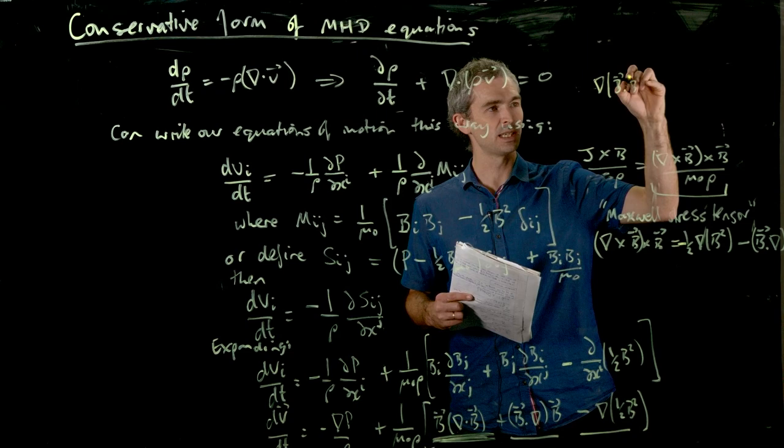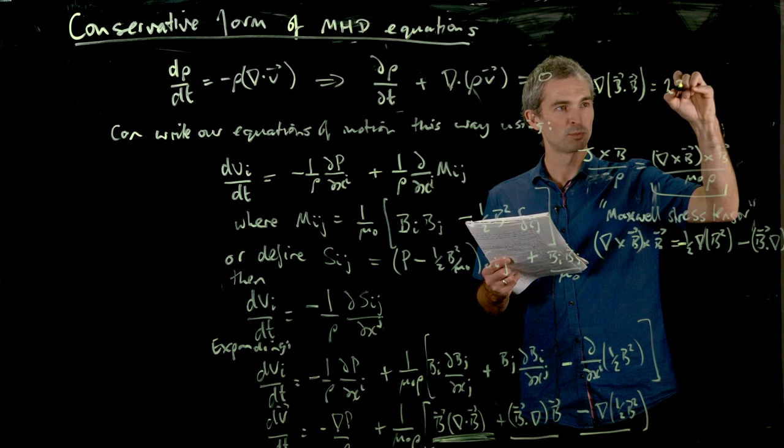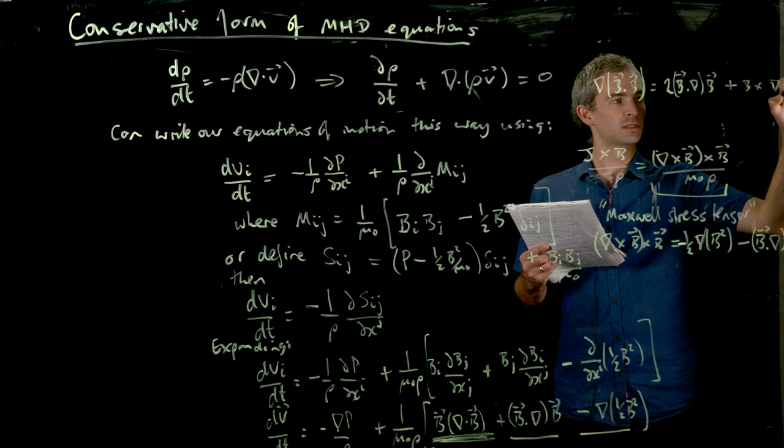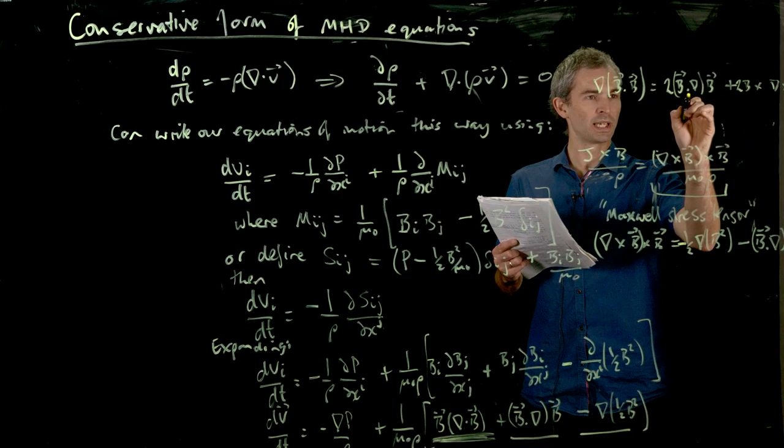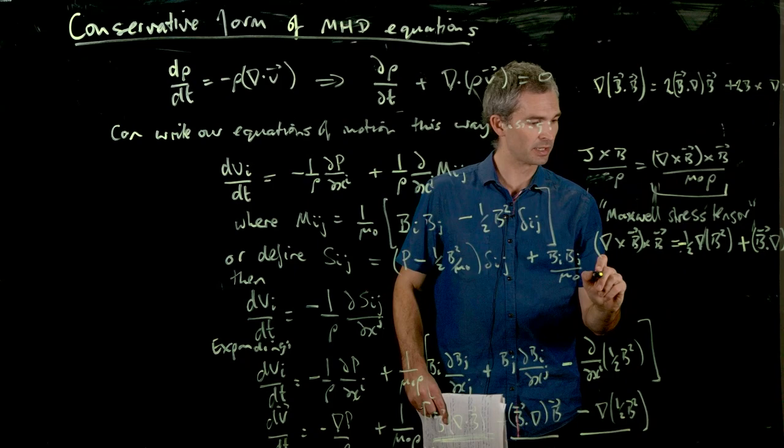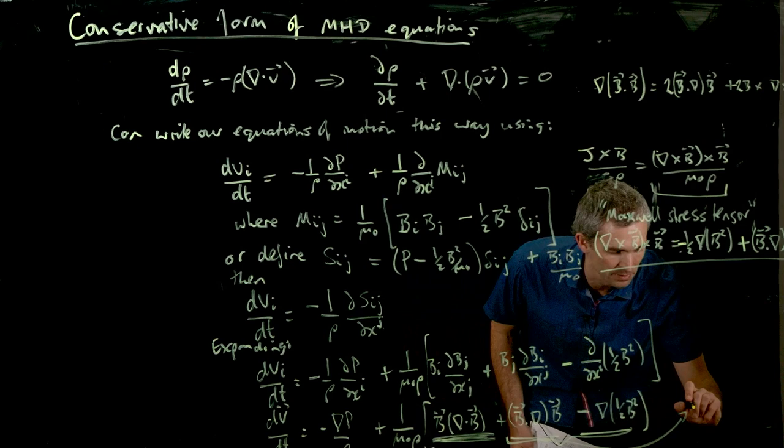So this is using the vector identity, a dot b, but we've got b dot b. So that is equal to two b dot grad b, plus b cross the curl of b. And it's going to be two of them as well. Okay. So we can say that half of b squared equals b dot grad b. So that's definitely true. So that's a minus and that's a plus. Yeah, because we've got a curl of b cross b, which is the minus sign of that one. So this is true.